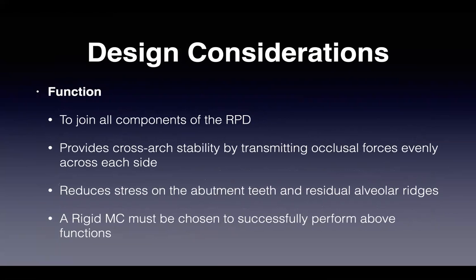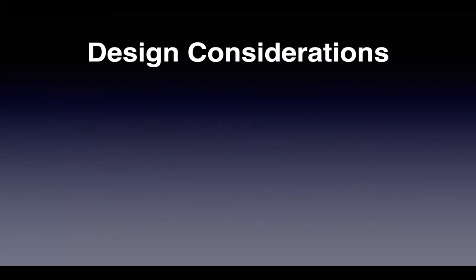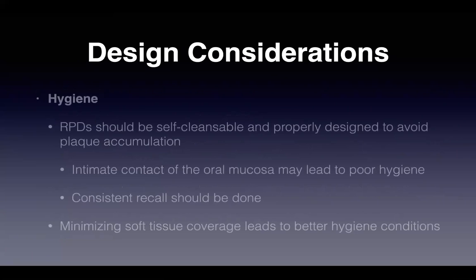The function of the major connector is to join all components of the removable partial denture. It provides cross-arch stability by transmitting occlusal forces evenly across each side and reduces stress on abutment teeth and residual alveolar ridges. All these functions can be achieved if a rigid major connector is chosen.